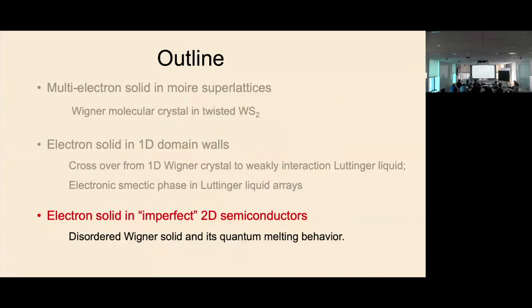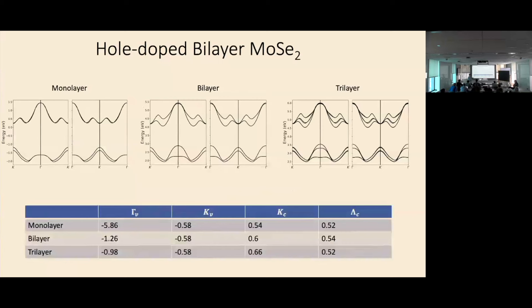Last, going back to supposedly the simplest case with no periodical potential in the system — just a simple 2D system where we dope electrons. To study the Wigner crystal phase, we are motivated to look at systems with large effective mass of the charge carriers, because large effective mass means large R_S and the Wigner crystal phase can be more robust. With transition metal dichalcogenides, we have different choices: different monolayer TMDs, bilayers, trilayers, and so on.